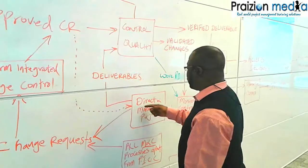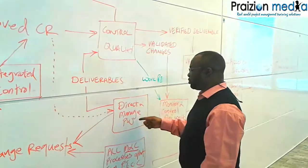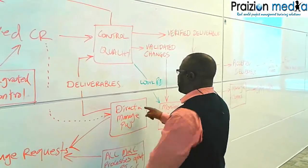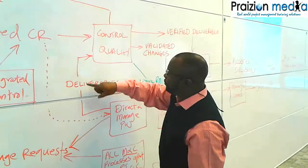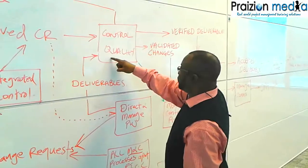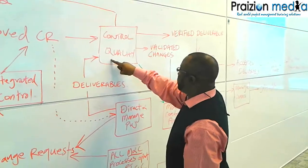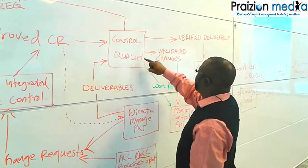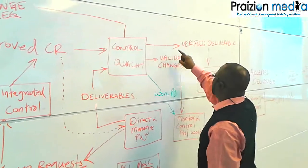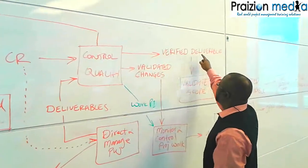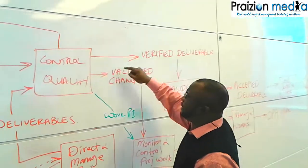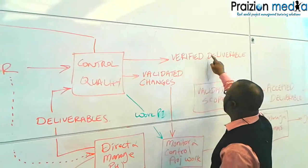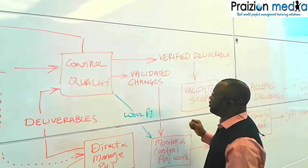It goes into Direct and Manage Project Work for execution to come out with the revised version of the deliverable. And if everything goes according to plan, then we have as an output verified deliverables, which means it's passed the test — then we have a verified deliverable.